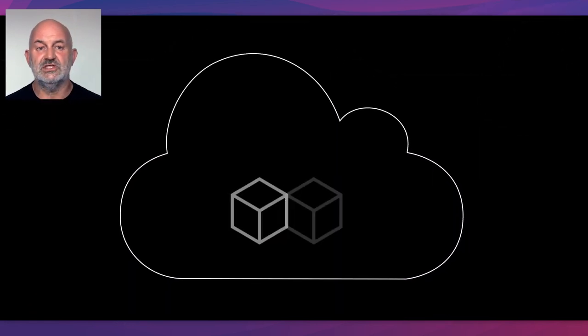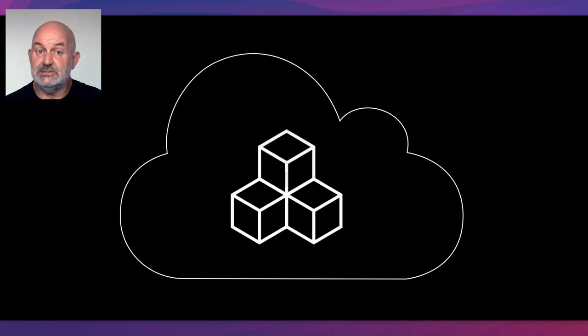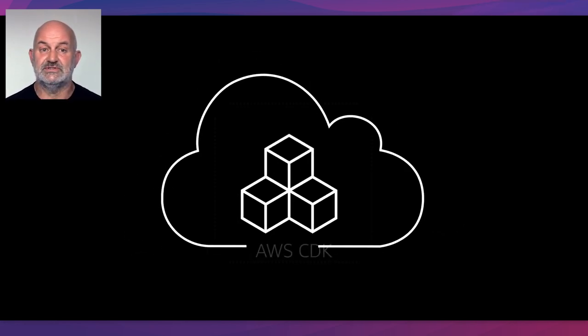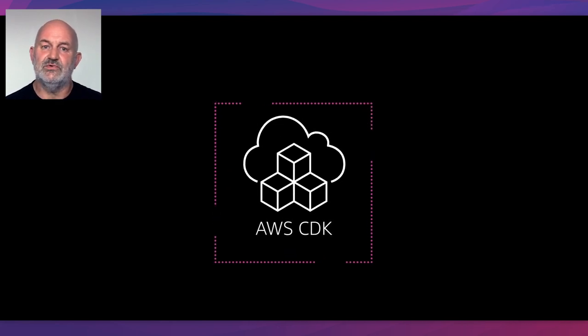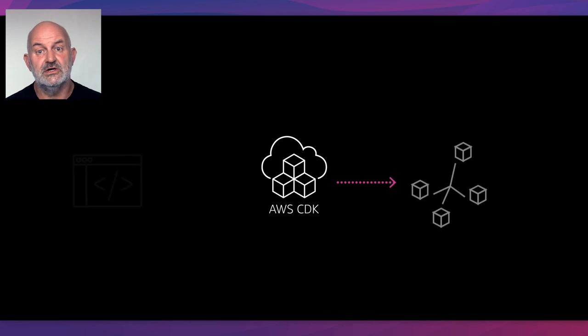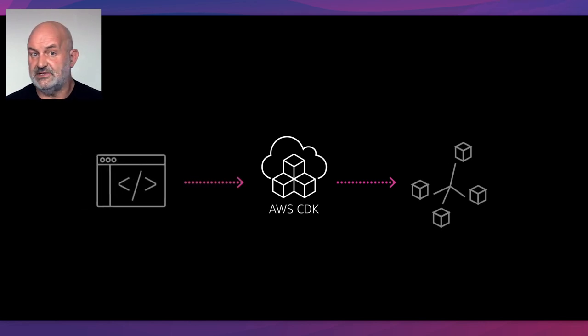And for cloud architects, developers, and DevOps engineers, we've created the AWS Cloud Development Kit, or CDK. The AWS CDK offers a high-level, object-oriented abstraction to define AWS resources imperatively using the power of modern programming languages. It works as a framework for all cloud development, allowing developers to provision architecture using the programming languages, IDE, and workflow they already know. To me, the CDK is a game-changer.